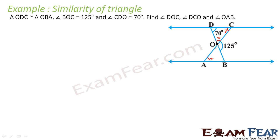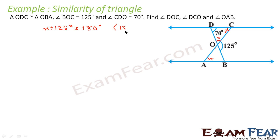Since DOA is a straight line, we can say that X plus 125 degrees is equal to 180 degrees. So we get X is equal to 180 minus 125, that is 55 degrees. So X is 55 degrees — one issue is solved.